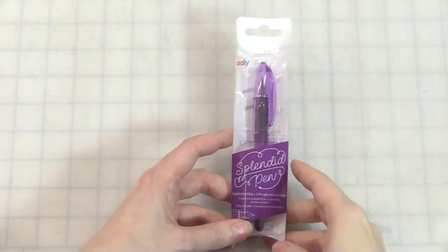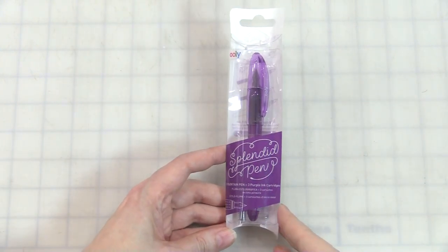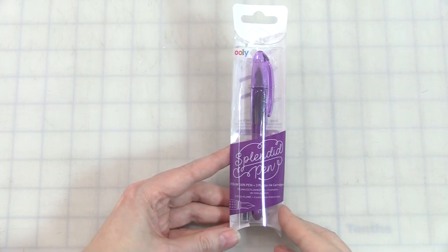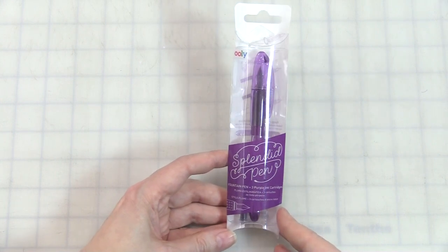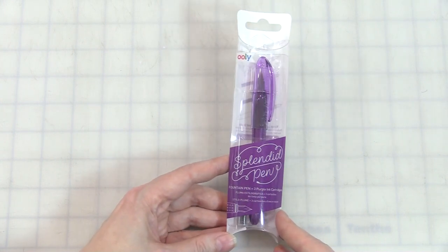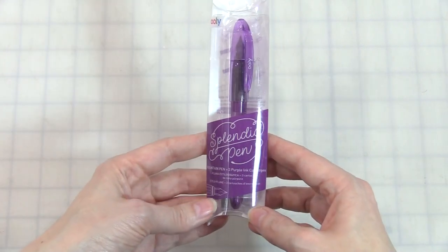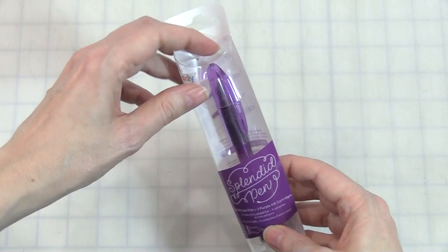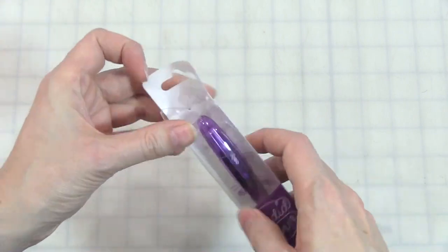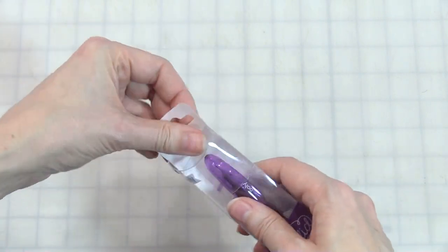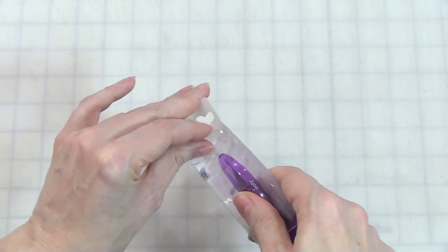In the new, sort of affordable fountain pens category, I found this new, I don't know if they're new, but they're new to me, a new kind of entry level fountain pen called the Uli. This one's called a splendid pen. I sort of like this off the rack. I like the really simple kind of minimalistic packaging.